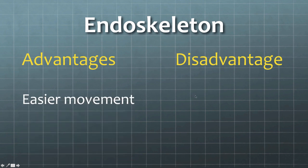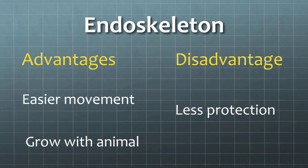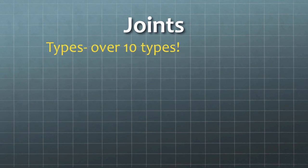An endoskeleton's advantages are that it's easier to move — it's much quicker and easier for a rabbit to move than a crab. You also grow and when you grow the skeleton grows along with it. The disadvantage obviously is there's less protection.